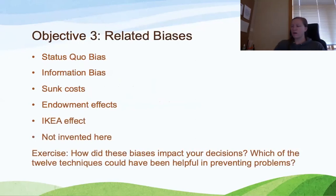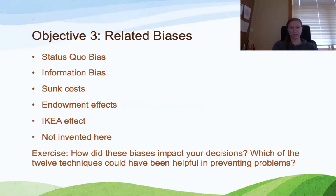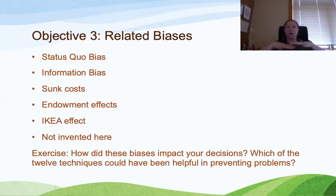There are six cognitive biases related to loss aversion. The first one is the status quo bias. As humans, we are biased to engage in behaviors that are going to maintain the status quo and avoid change.